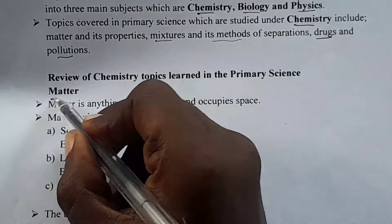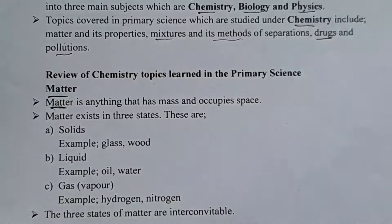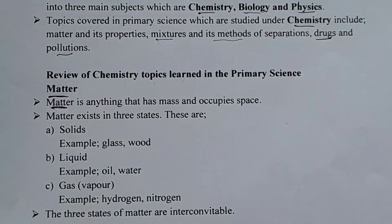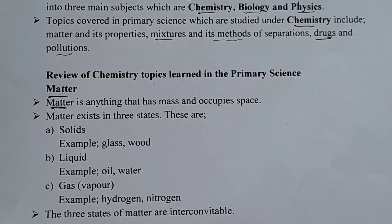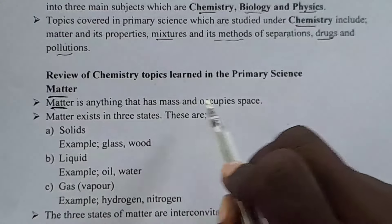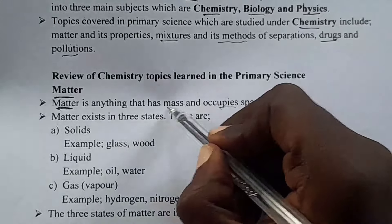The first thing we are going to look at is matter. Let's start with defining matter. What is matter? Matter is anything that has mass and occupies space. During the exam, remember that in secondary school, the exams don't have options — you will be given the question and you are supposed to answer it without having options. Matter is anything that has mass and occupies space, or you can say matter is anything that occupies space and has mass. You also get your answer right.